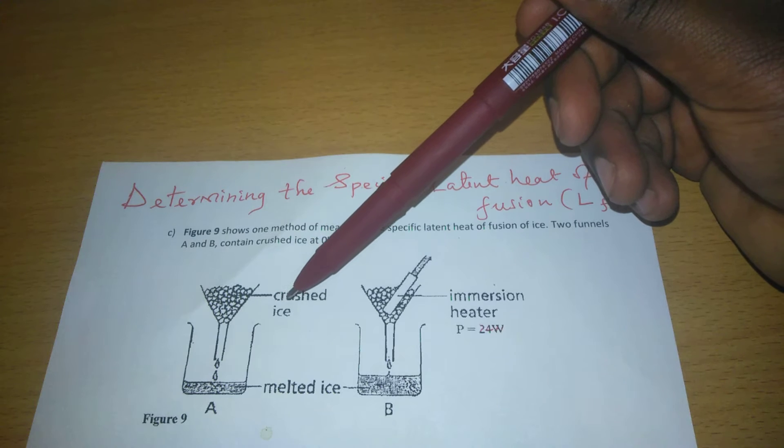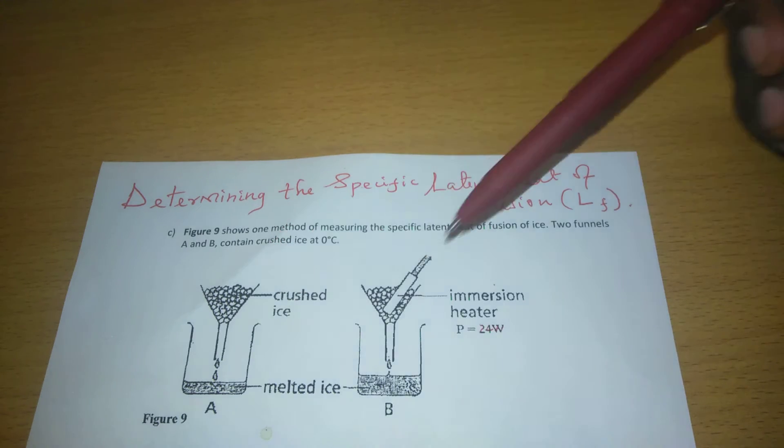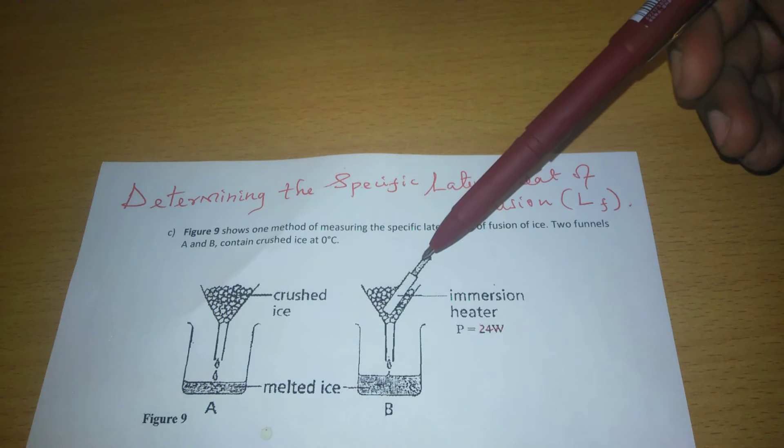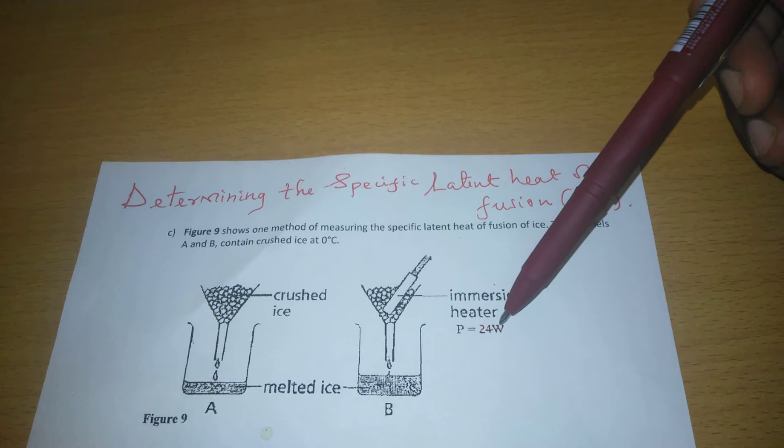Remember, 0 degrees Celsius is the exact temperature at which pure ice should melt to water. In figure A, there is no immersion heater. But in B, we have an immersion heater which is rated a power of 24 watts.